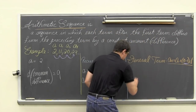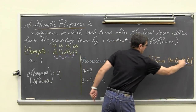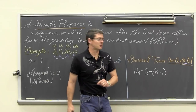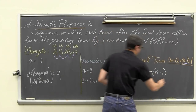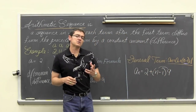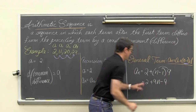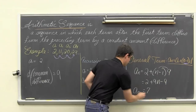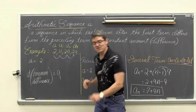Our general term is going to be a sub n equals a sub 1, which is 2, plus n minus 1 times d. In a sequence, n is a positive integer — it is just telling you where you are in the sequence — times the common difference of 9. Your teacher may want you to simplify this expression. So we have 2 plus 9n minus 9, and 2 minus 9 is negative 7. So we have a sub n is equal to negative 7 plus 9n. Let's go look at a couple more examples.